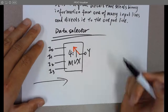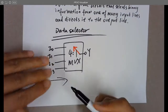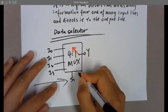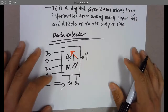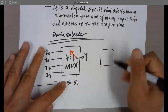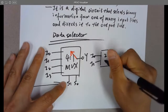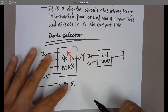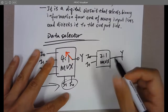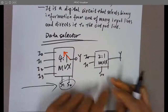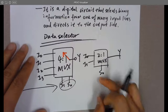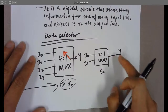Since you have 4 inputs — 4 combinations — you need 2 binary bits, S1 and S0, as selection bits to choose which input to use. For a 2-to-1 MUX with inputs I0 and I1, you only need one selection bit: when it's 0 you select I0, when it's 1 you pick I1.